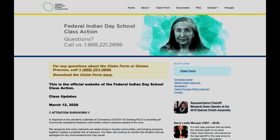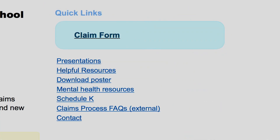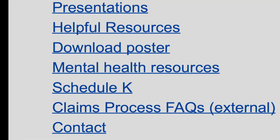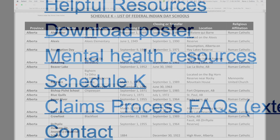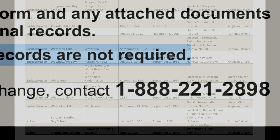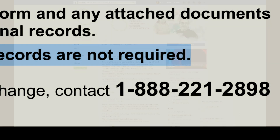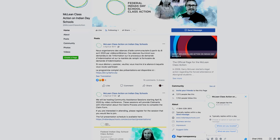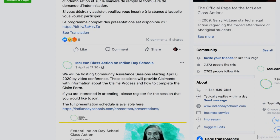Today I'm going to help guide you through the website for the Federal Indian Day School Class Action. On that website you will find the claim forms, be able to download posters, and there'll be other resources there that you may be able to access — something called a Schedule K, which is a list of schools currently being covered under the Day School Class Action suit. There's also contact information numbers where you can phone to get information, and a Facebook page where you can post questions directly to the people organizing the class action suit.